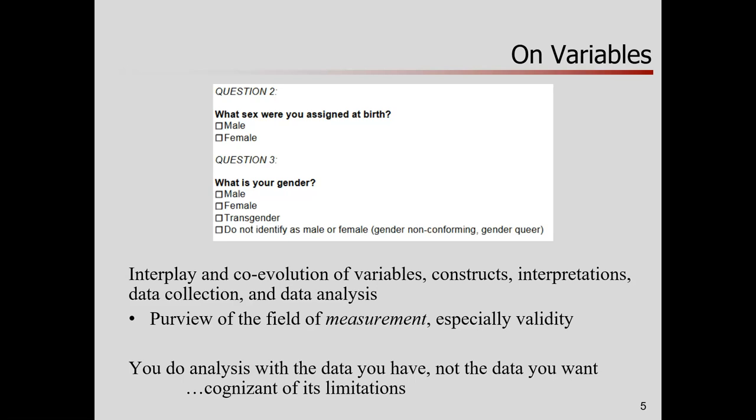This is the purview, or this pertains to the field of measurement, especially validity. So if I think about the construct or the concept of gender, how I choose to measure it, what options I give, or what data I'm willing to collect, can have serious impact on my results. You do data analysis with the data that you have, not the data you want. It is often the case that the data that we've collected on this thing, like gender, is really incomplete, not in the sense that I'm missing some scores for people, but that it comes from a very limited notion of the idea of gender.